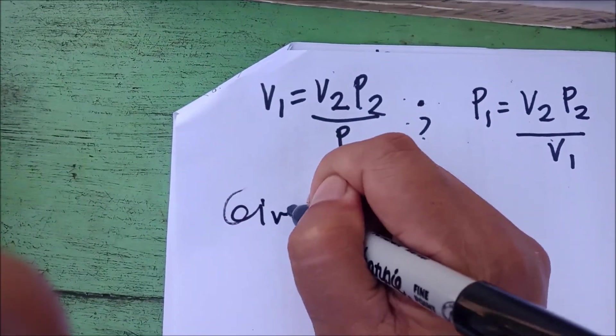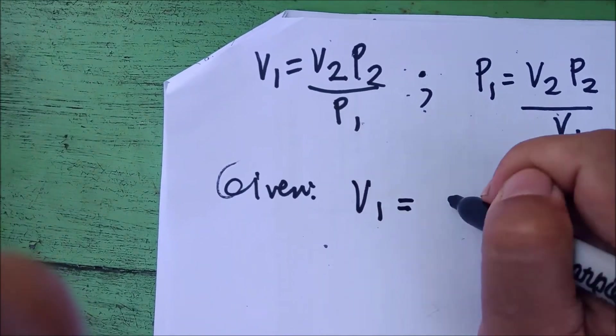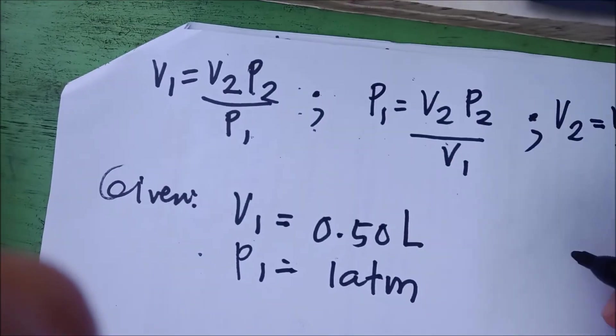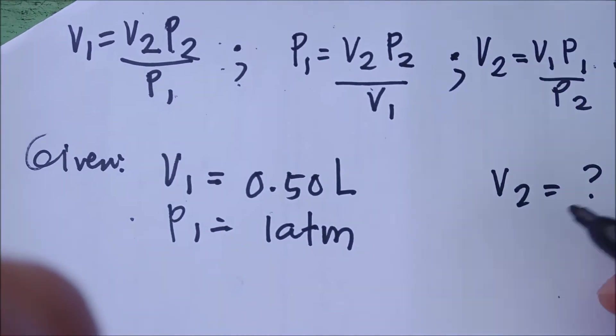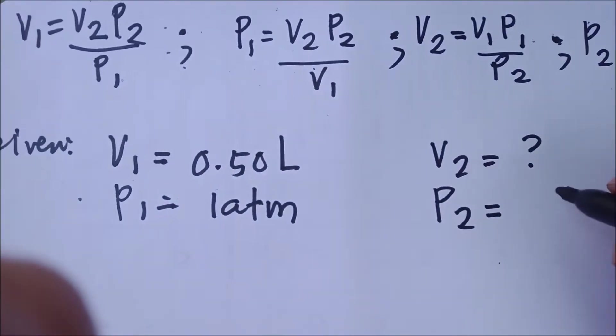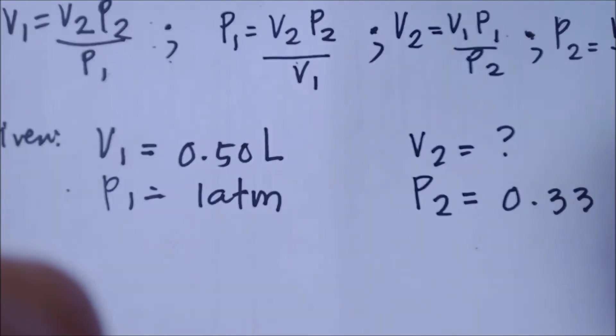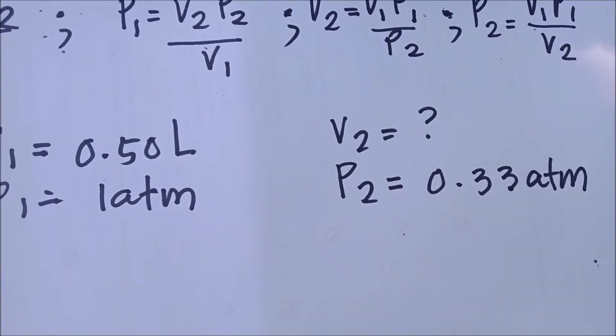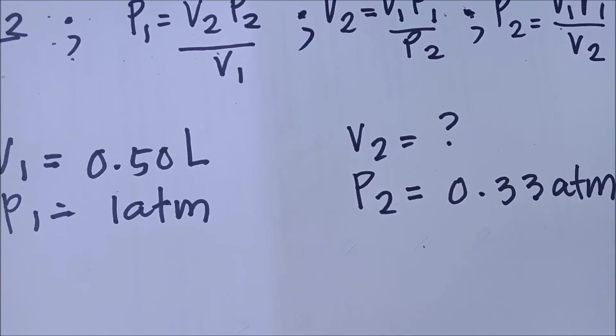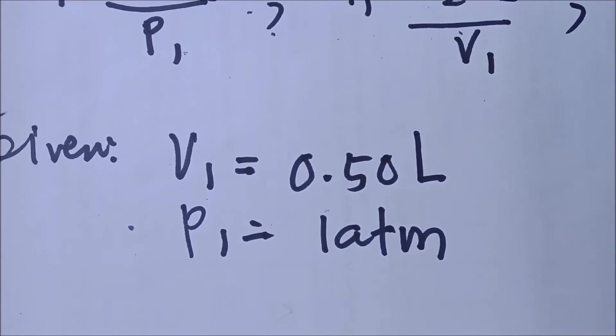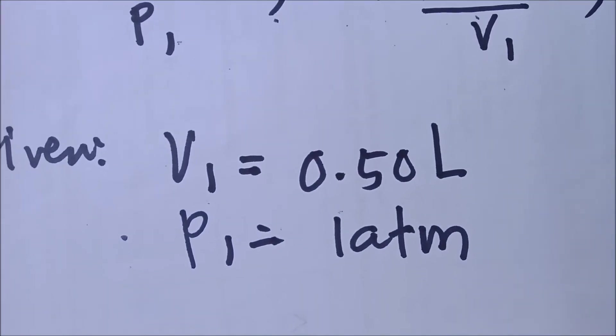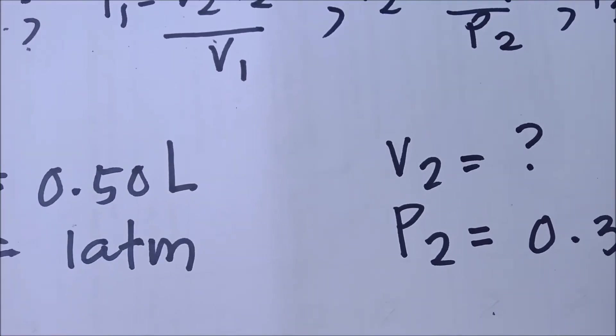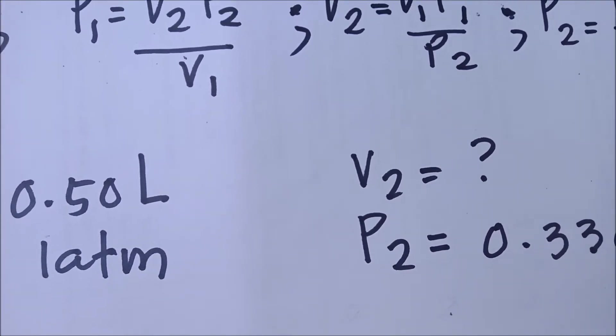Let's solve the problem. You are given V1 is equal to 0.50 liter. P1 is 1 atmosphere. V2 is unknown. After the P2 decreased to 0.33 atmosphere. Since the units in the pressure are the same, there's no need for us to convert it to make them the same, because they are already the same. They are both expressed in atmosphere. The volume, first volume, is in liters. Meaning, the volume of the balloon, after the pressure decreased, may also be expressed in liter value.